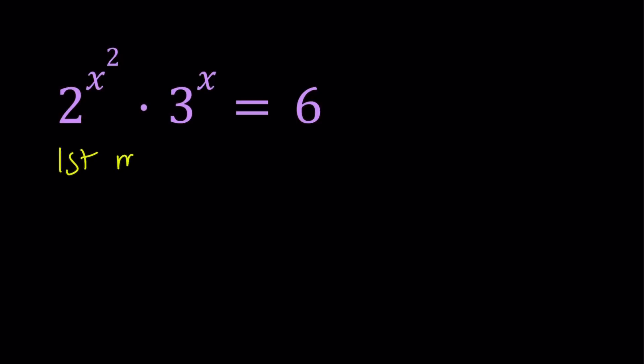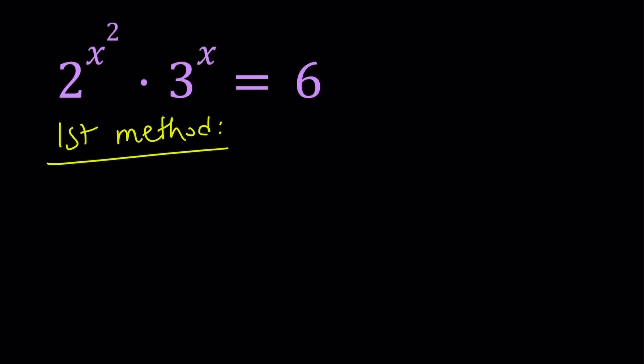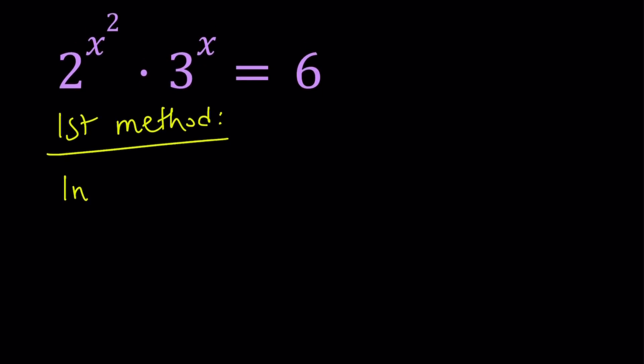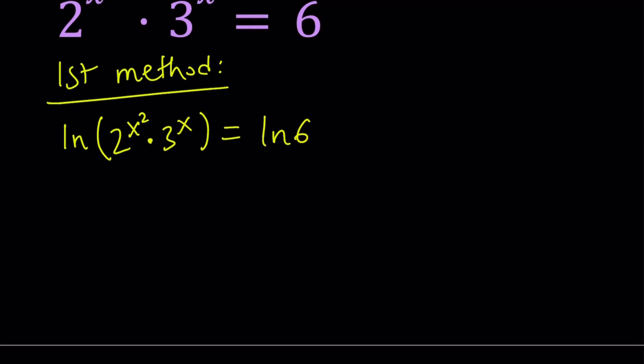First method. Now, I'm going to ln both sides, and you can use any base. If you want, you can log both sides, base 2 or another base, but I'm going to use ln. If we ln both sides, we get ln(2^(x²) · 3^x) = ln6. Using properties of logs, we can write this as x²ln2 + xln3 = ln6.